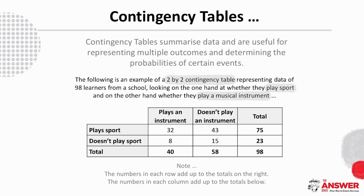The numbers in each row add up to the totals on the right and the numbers in each column add up to the totals below. The overall total is in the bottom right corner and it is both a total from the totals above as well as from the totals to its left. Having two ways to find this total helps to make sure that all your entries are correct.